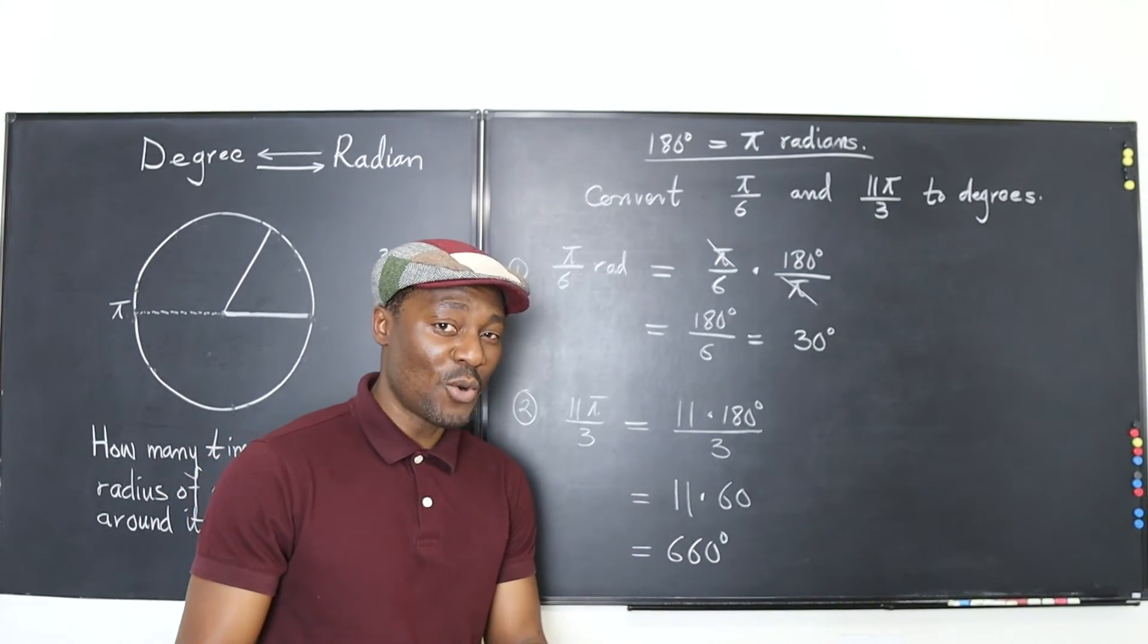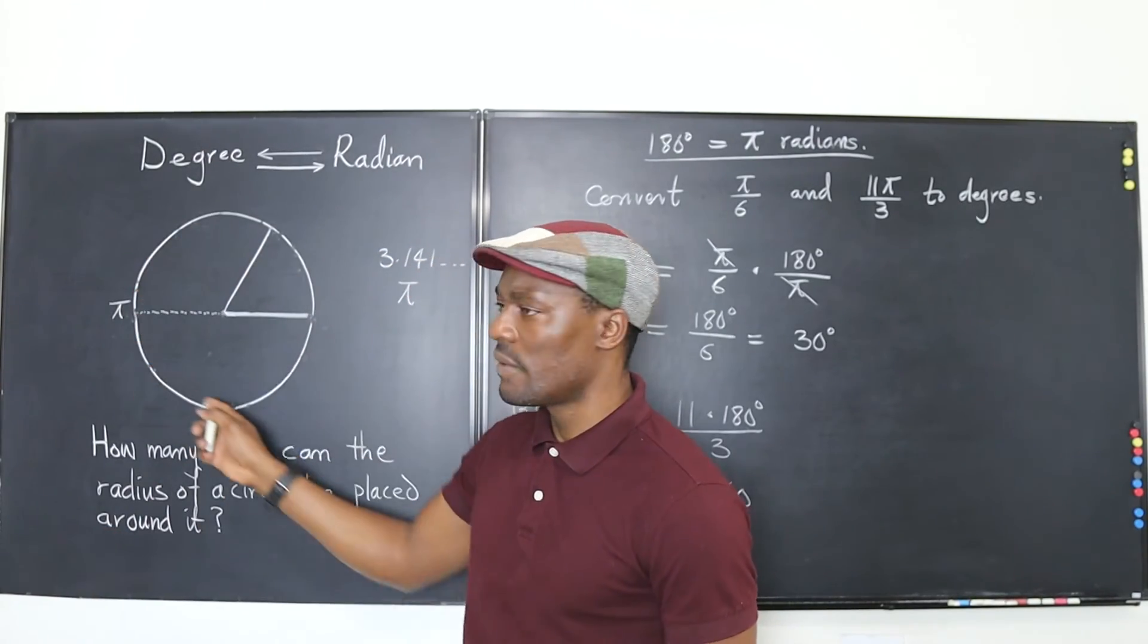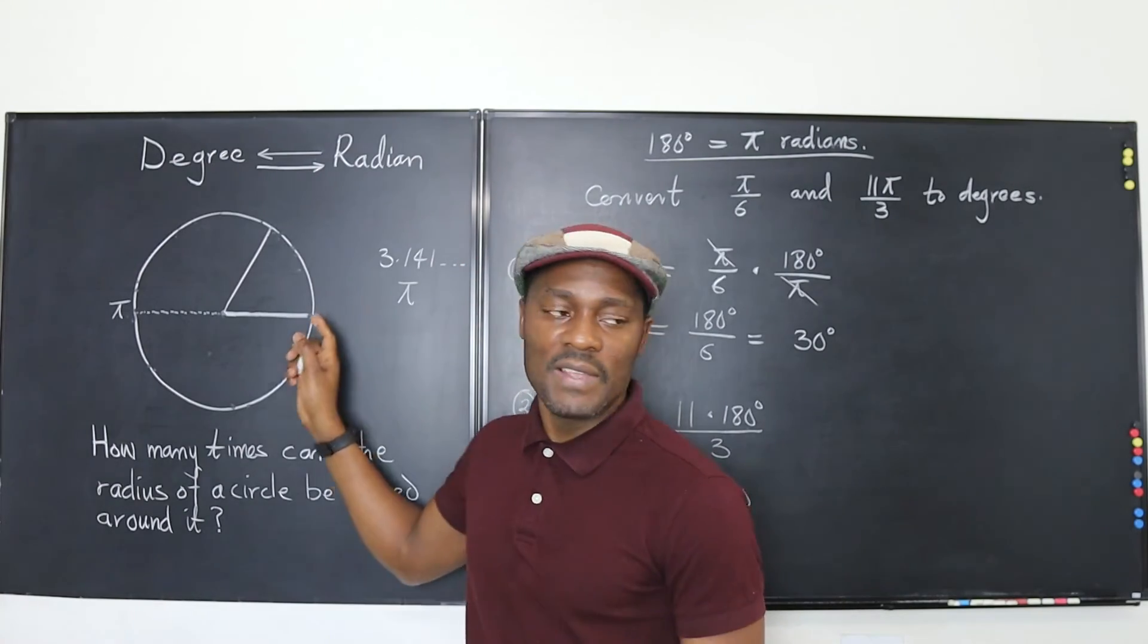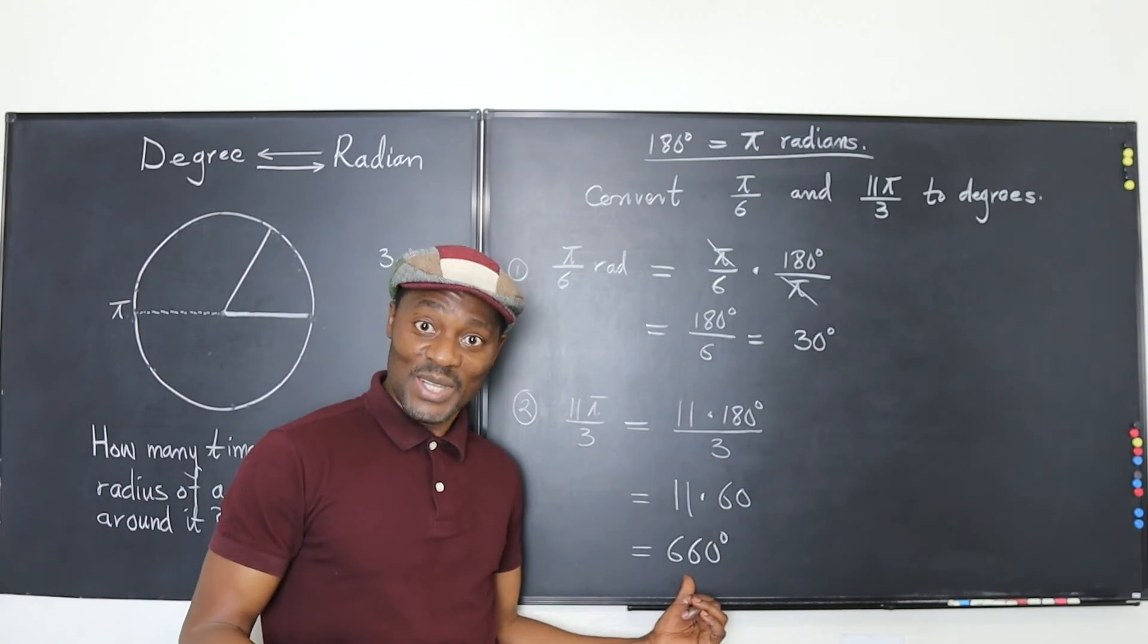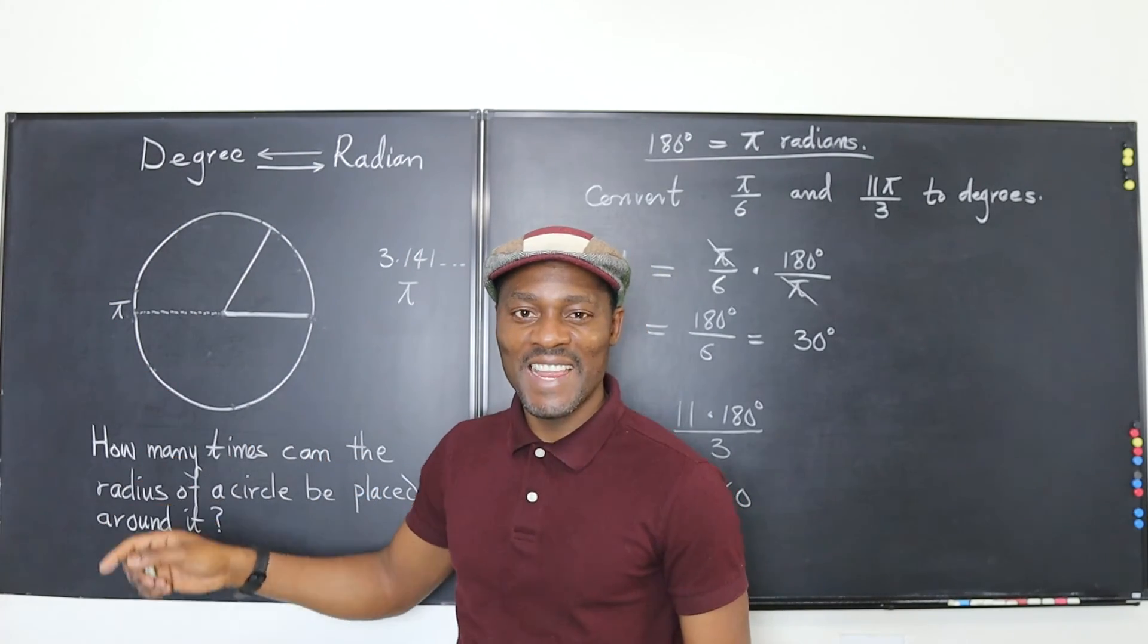So you might have a question. How can an angle be even greater than going around a circle? Well, you just keep going. So after you get 360 degrees, if the angle is greater than 360, you keep going, you make another 360 until you get there.